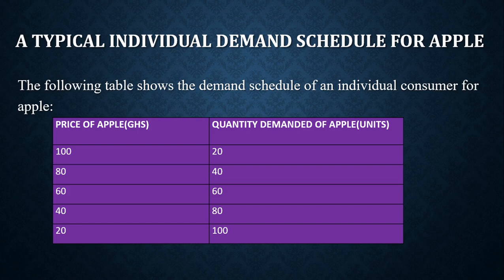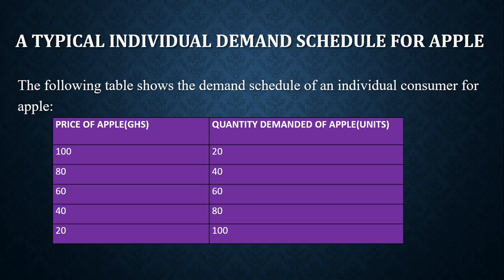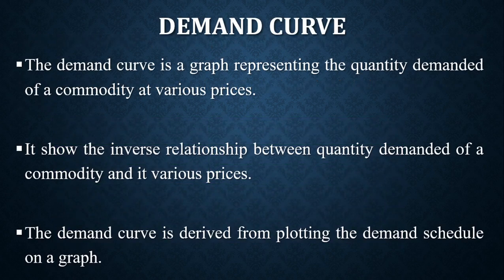Here is a typical example of a demand schedule showing the price of apples and quantity demanded of apples. If the price of apples is 100, quantity demanded is 20. If the price is 80, quantity demanded is 40. If the price is 60, quantity demanded is 60. As the price of apples decreases from 100 to 80, quantity demanded increases from 20 to 40 — that is the demand schedule.